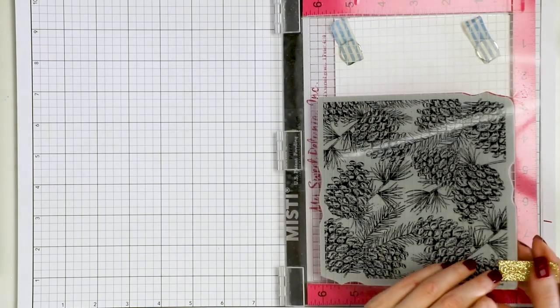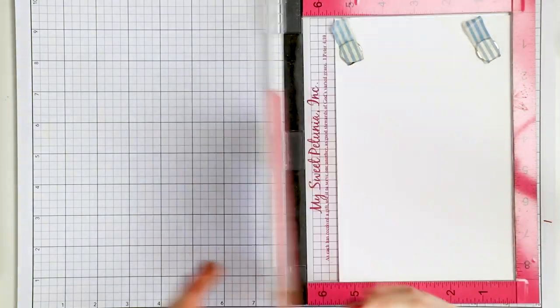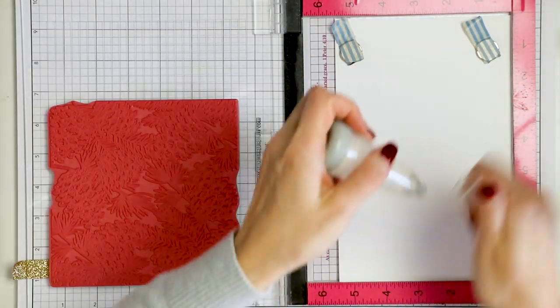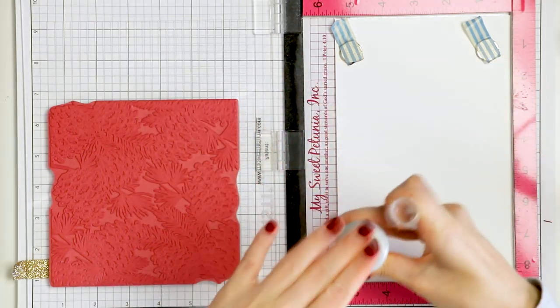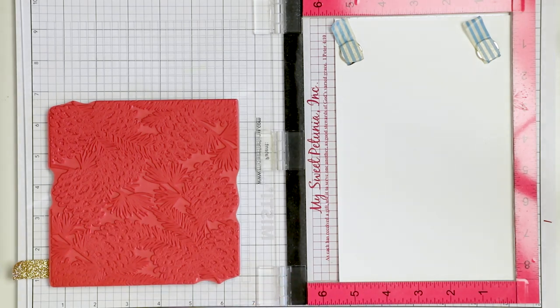I'm starting to work on my card by heat embossing a background. For this I'm using a MISTI stamping tool. I've already placed a new pine cone background stamp inside my MISTI and have added a sheet of white cardstock.